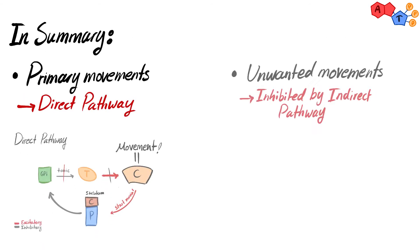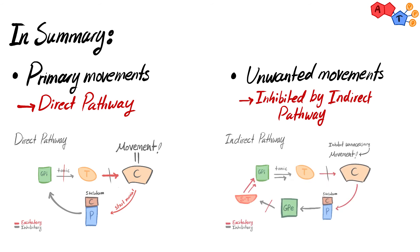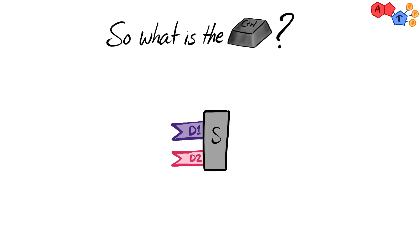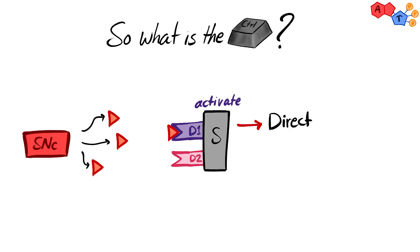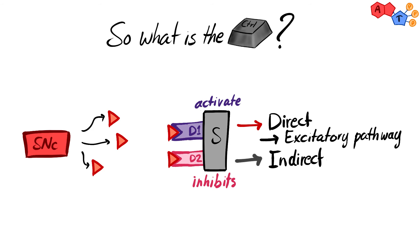In summary, the direct pathway drives primary movements while the indirect pathway inhibits unwanted movements. These pathways are regulated by dopamine: the striatum has both D1 and D2 receptors. Dopamine from substantia nigra pars compacta activating D1 receptors activates the striatum, engaging the direct pathway. Dopamine activating D2 receptors inhibits the striatum, inactivating the indirect pathway, resulting in less inhibition of the thalamus and more movement.